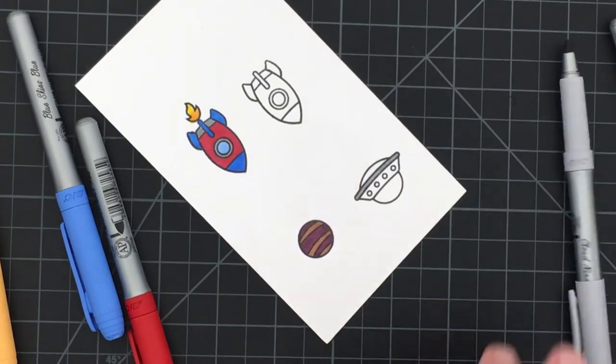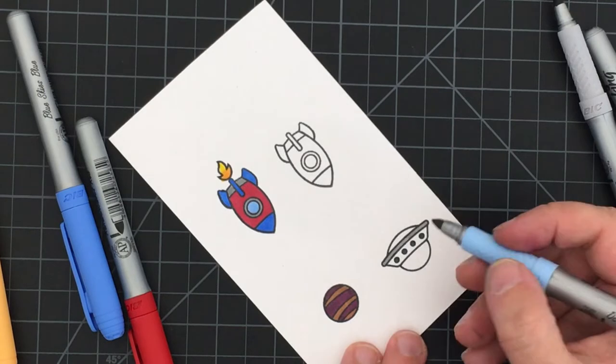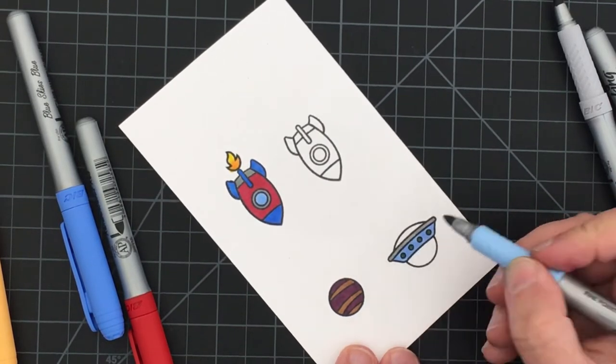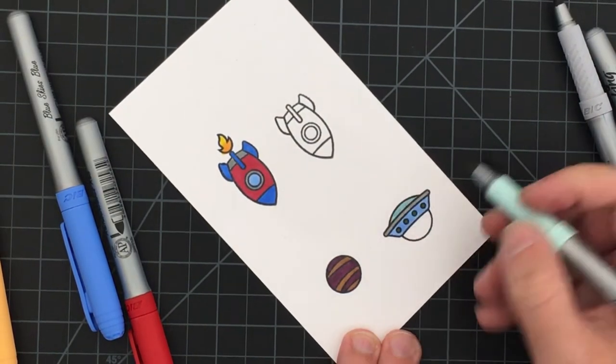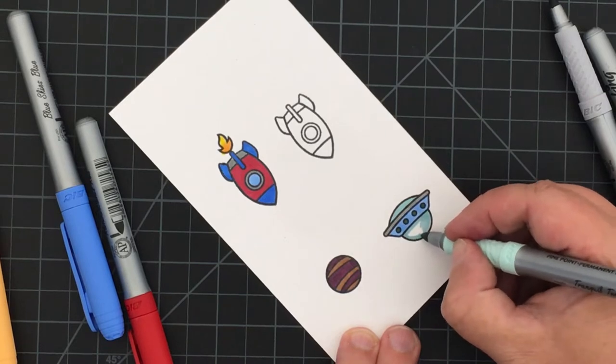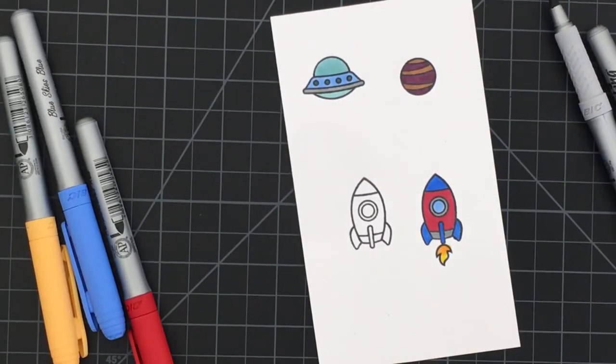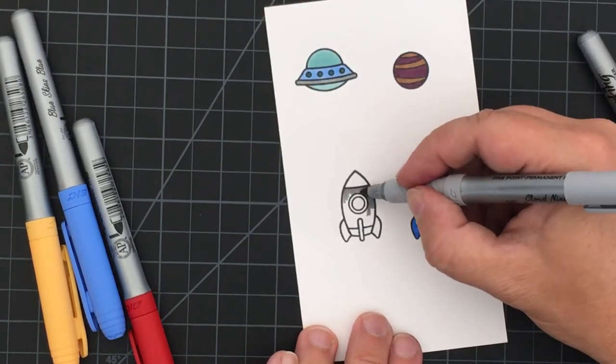I went ahead and colored in the rocket and the planet there, and now I am coloring in the little spacecraft, again just using my Bic markers. I didn't plan to do a whole lot of blending anyways because I really don't even know how to blend. I'm gonna start watching videos and try to learn a little bit, but for right now I think the card's gonna come out really nice with the way I have it.